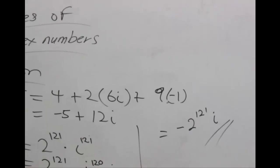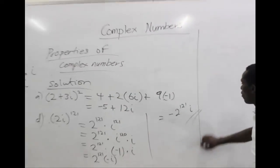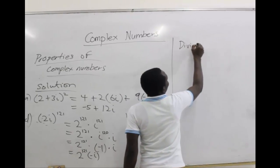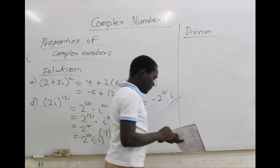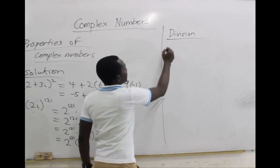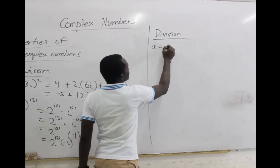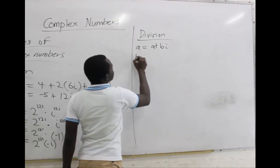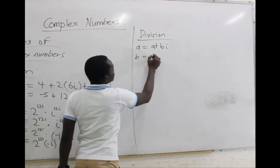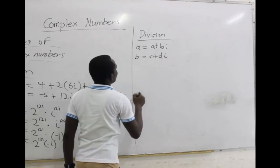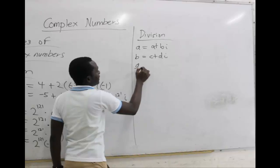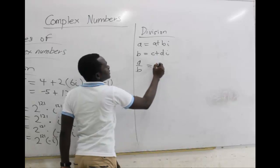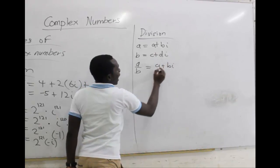With that, we can move on to division of complex numbers. Assume we have two complex numbers: let's say A which is a + bi, and the second one B which is c + di. If we want to divide A by B, it simply means we are going to divide their components as well.